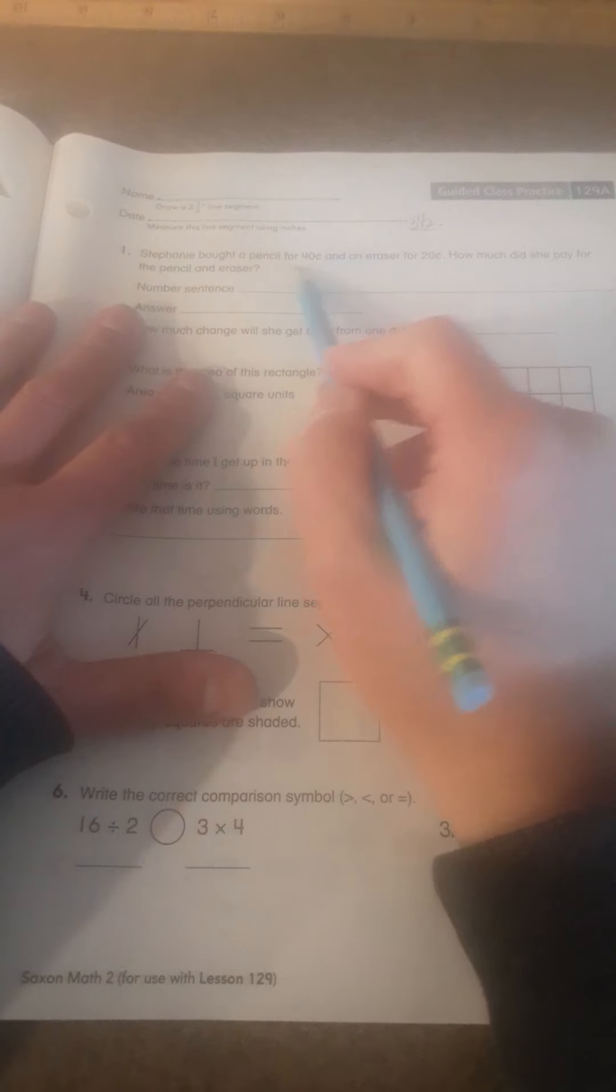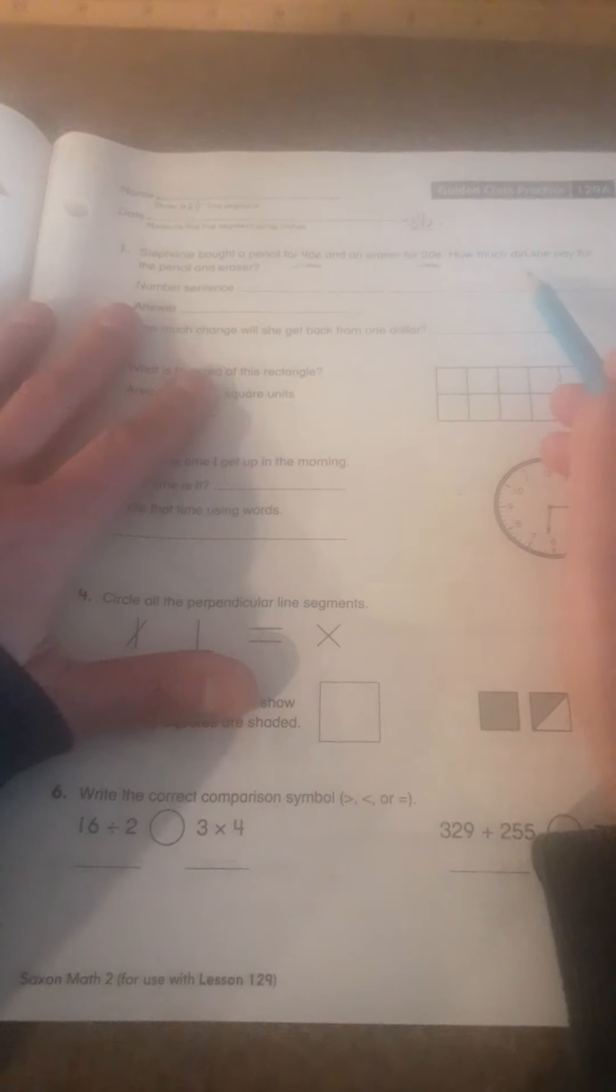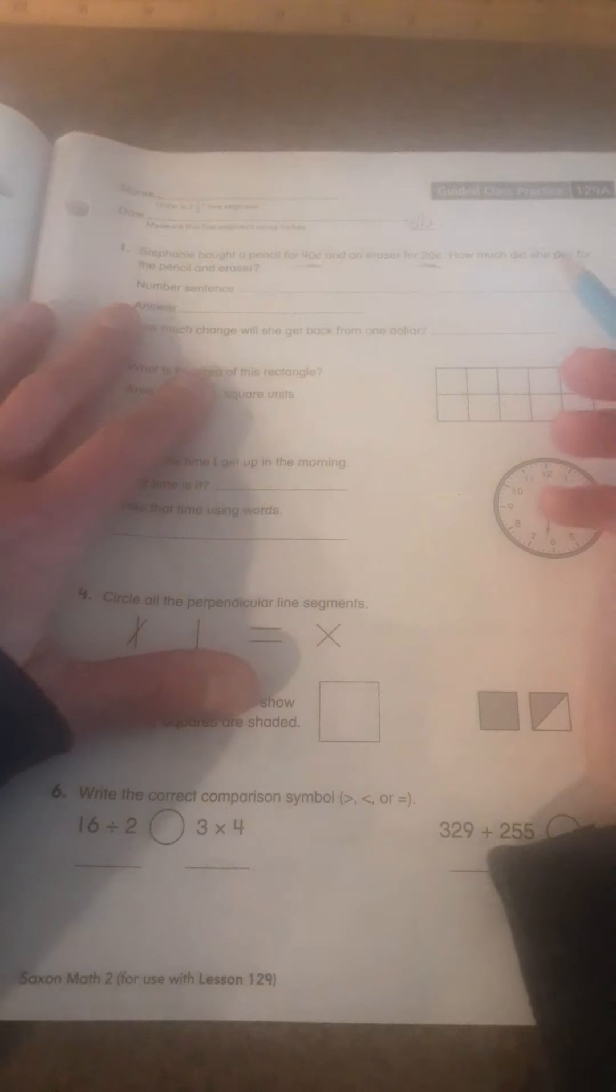Stephanie bought a pencil for $0.40 and an eraser for $0.20. How much did she pay for the pencil and the eraser? Well, $0.40 plus $0.20 equals $0.60.